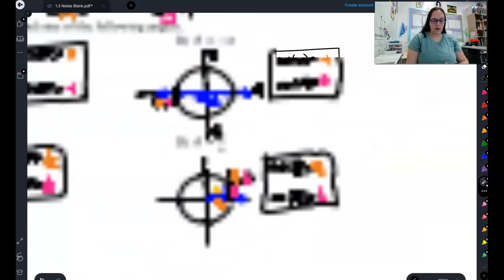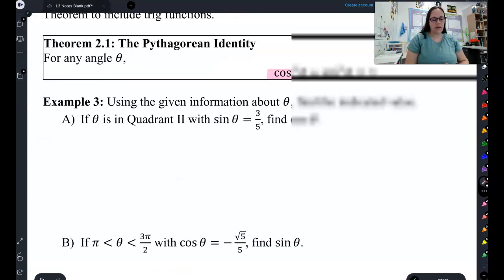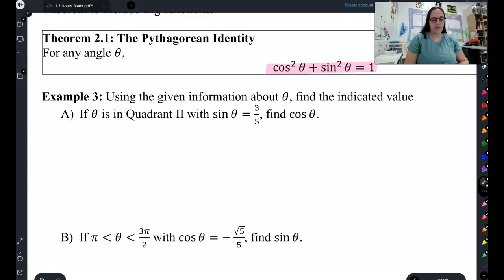So, now that we understand that, let's go back to the Pythagorean identity. You will need to memorize this one and start to talk about how we apply it. So, in example 3a, we have an angle. This angle is in quadrant 2. And we know that the sine of this angle is 3 fifths. And we want to find the cosine. That's what we want to do. Well, we can use the Pythagorean identity to do this.